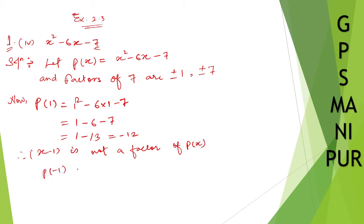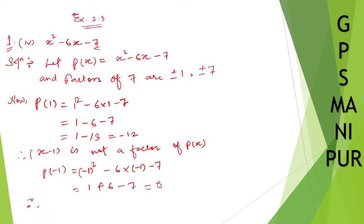Now let us take p(-1). So p(-1) will be (-1) squared minus 6 into (-1) minus 7. So minus 1 squared is plus 1, minus into minus gives plus 6, minus 7. So 1 plus 6 is 7, and 7 minus 7 is 0. Therefore, x plus 1 is a factor of p(x).